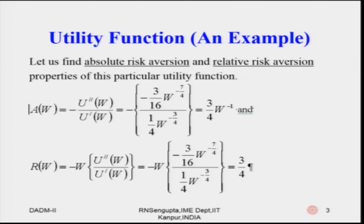The sign before A was a typo error — apologies for that. A is given by minus u double prime divided by u prime, and its value comes out to be (3/4) W to the power minus 1, which is 1/W. The R value, given by minus W times u double prime divided by u prime, comes out to be 3/4. So A comes out to be (3/4) W to the power minus 2.